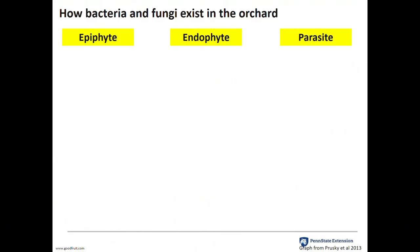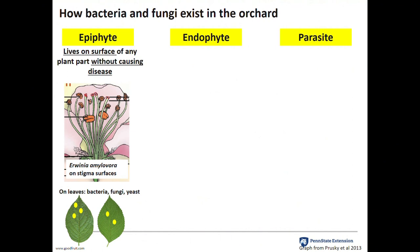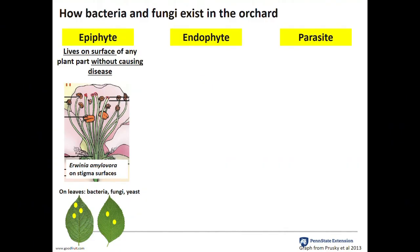Shifting to bacteria and fungi and how they exist. Epiphytes live on the surface of plant parts and don't cause disease — 'epi' meaning surface of the plant. An example is Erwinia amylovora, which are epiphytes on the stigmas of flowers. When Erwinia amylovora is on the stigmas, it's just minding its own business, feeding off proteins, not causing disease. It's not until that bacteria is washed into the nectaries that it turns parasitic and shifts its phase. Bacteria, fungi, and yeast can all exist on the leaf surface — some are problems, some are asymptomatic. This is how we often discover biocontrol products.